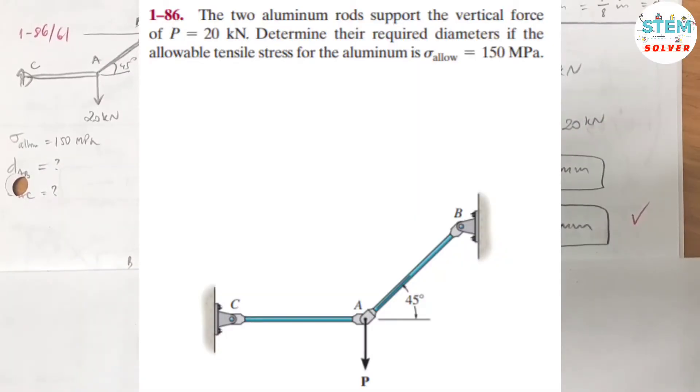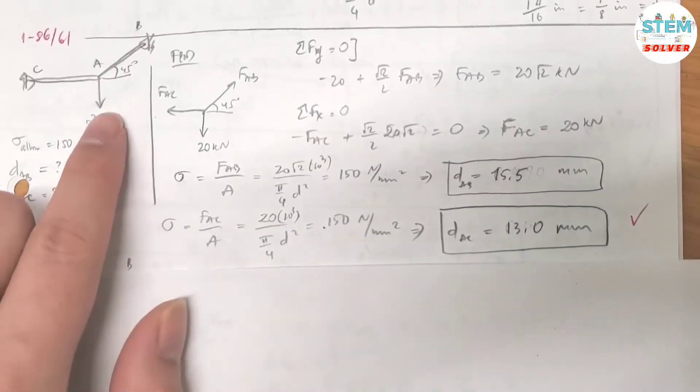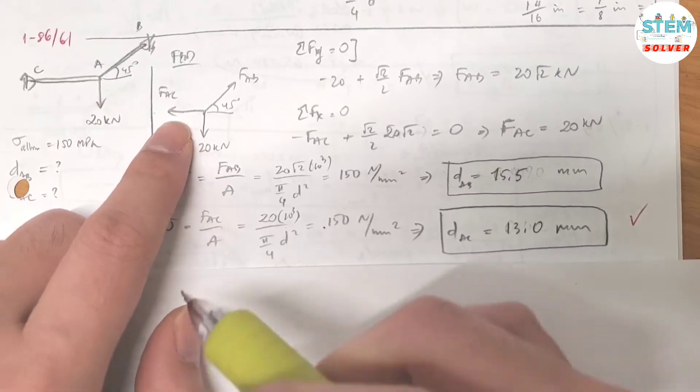The two aluminum rods support the vertical force of 20 kN. Determine the required diameter if the allowable tensile stress for the aluminum is 150 MPa. Here's the figure and the free body diagram for it.